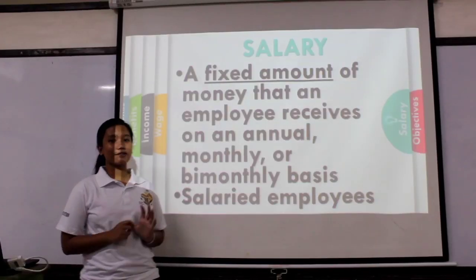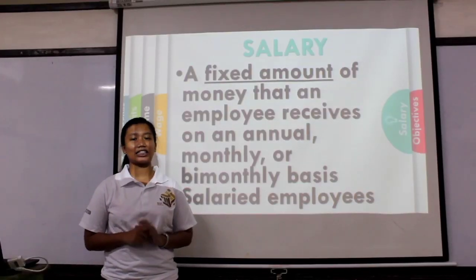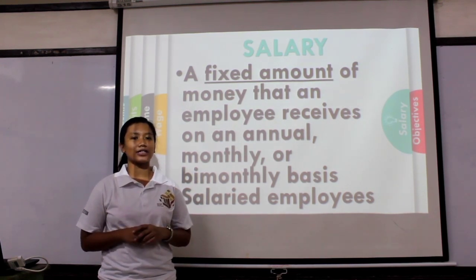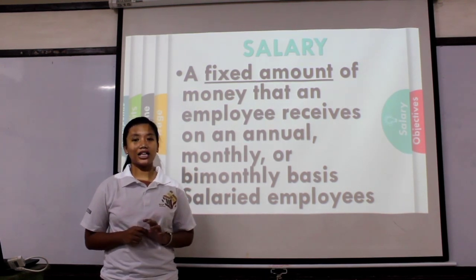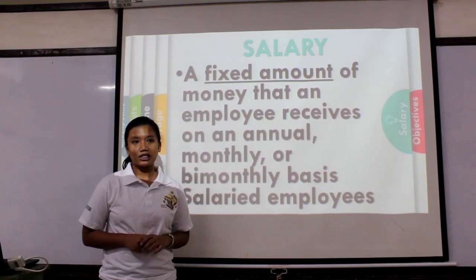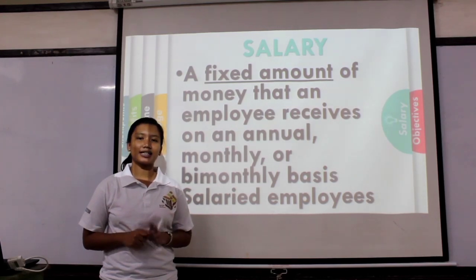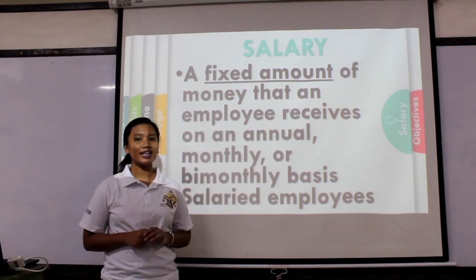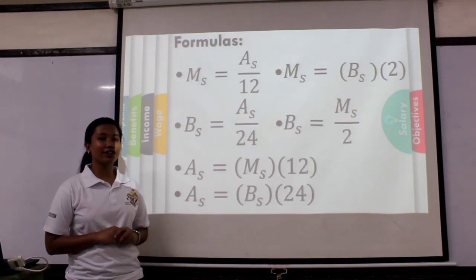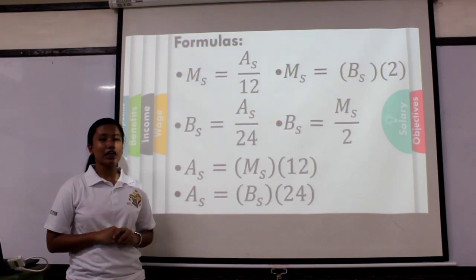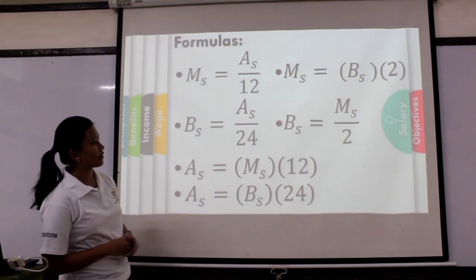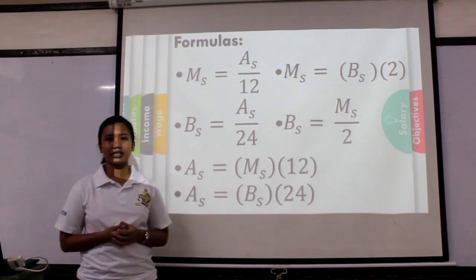We'll discuss first salary. Salary is a fixed amount which an employee receives on an annual, monthly, or bimonthly basis. An employee who receives a salary is called a salaried employee. To compute for the salary, we have six formulas.